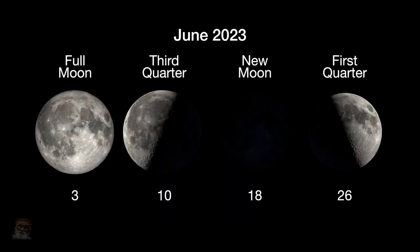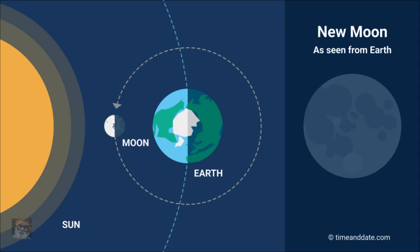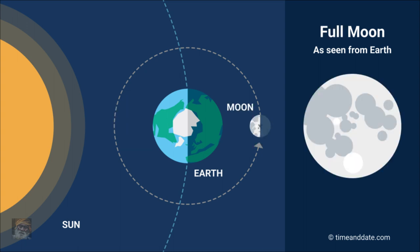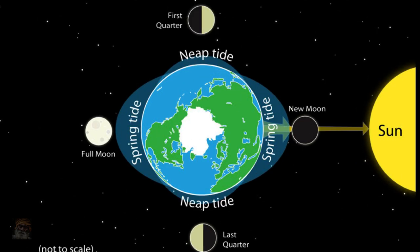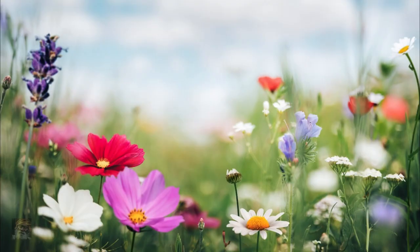Twice each month, the moon lines up with the earth and sun. These are called new moon and full moon. When the moon is between earth and sun, it is in the sun's shadow and appears dark — this is the new moon. When the earth is between the sun and moon, the moon reflects sunlight — this is the full moon. When the sun, moon and earth are all lined up, the sun's tidal force works with the moon's tidal force. The combined pull can cause the highest and the lowest tides, called spring tides. Spring tides happen whenever there is a new moon or a full moon and have nothing to do with the season of spring.